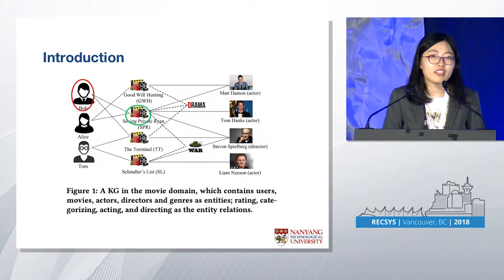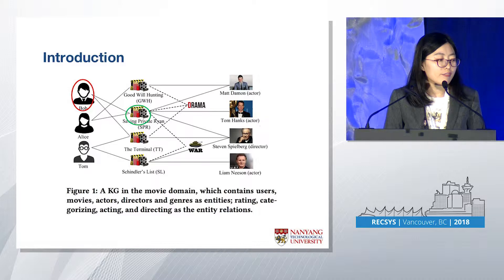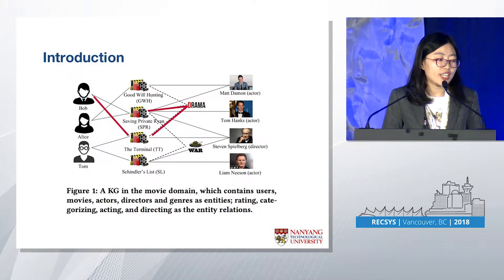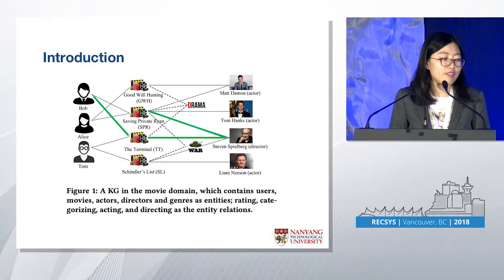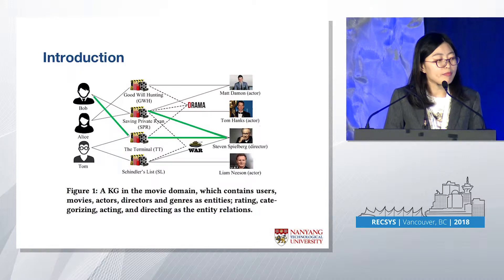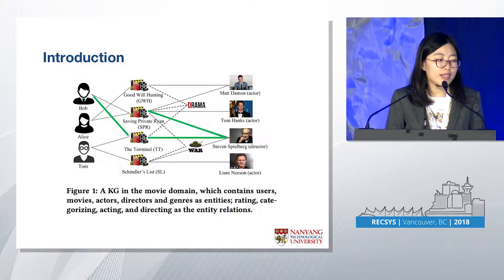Let's take Bob and Saving Private Ryan as an example. We may infer Bob's preference towards the movie by the following paths. The first path goes from Bob to the terminal, then to drama, then to Saving Private Ryan — capturing the semantics that Bob may prefer movies belonging to the drama category. The second path goes from Bob to the terminal, then to Steven Spielberg, reaching Saving Private Ryan — suggesting Bob is very interested in movies directed by Steven Spielberg. But these two different paths may have different importance on Bob's decision towards Saving Private Ryan.